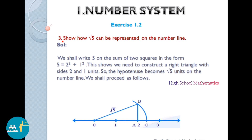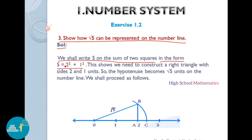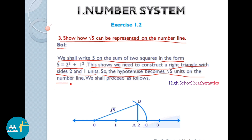Third question: show how square root of 5 can be represented on the number line. We shall write 5 as a sum of two squares: 5 equals 2 squared plus 1 squared, which is 4 plus 1. This shows we need to construct a right triangle with sides 2 and 1 units, so the hypotenuse becomes square root of 5 units on the number line.